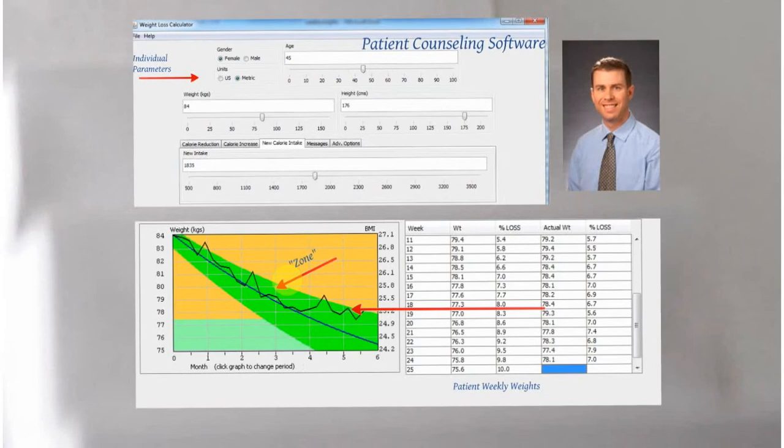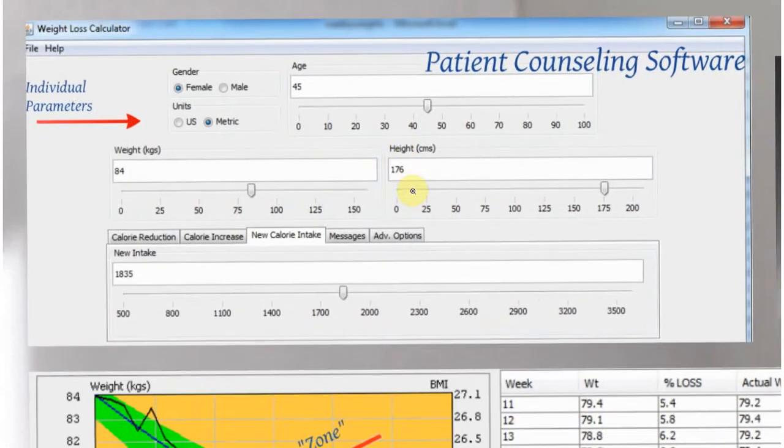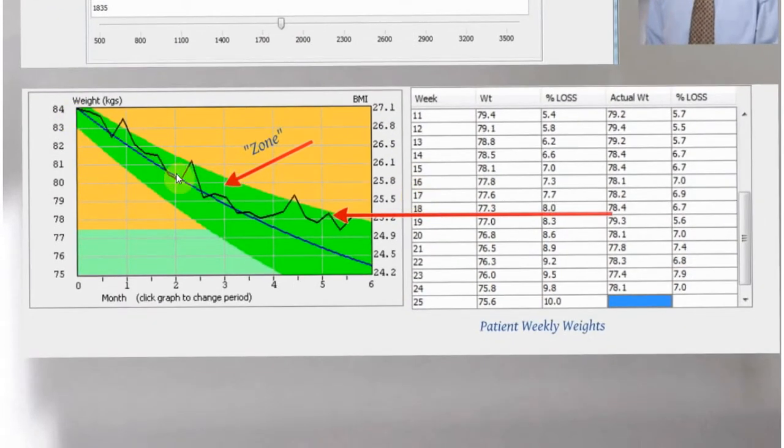I teamed up with Corby Martin from Pennington Biomedical Research Center and we developed a mathematical model that we tested and validated to determine how much weight someone should lose on a change of intake that's been personalized. We built patient counseling software that also has a counseling dashboard attached to it.